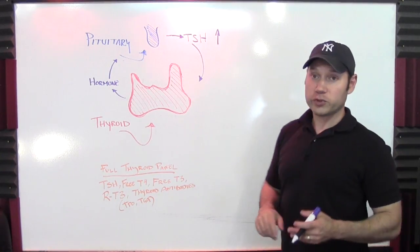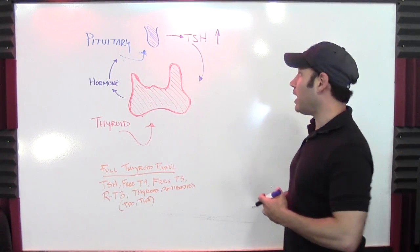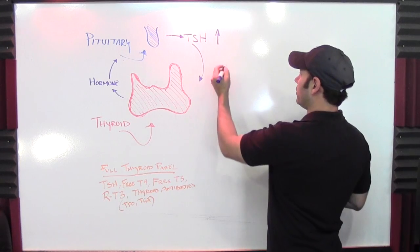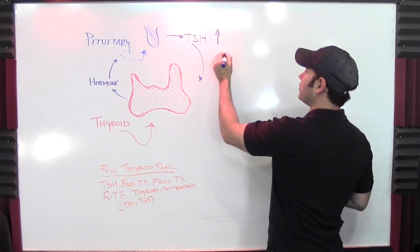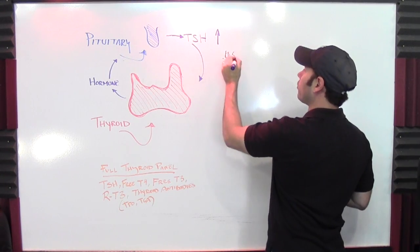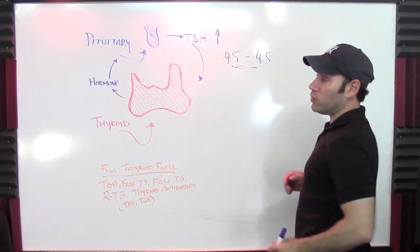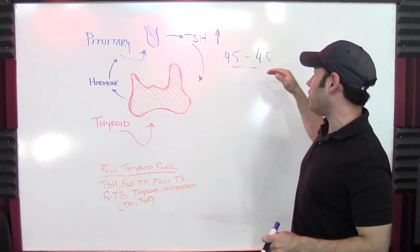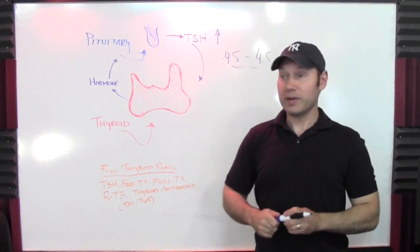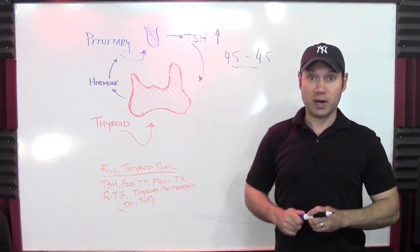I'll add that the reference range for TSH is not correct in most cases. The typical reference range is 0.45 to 4.5. That's the reference range that most doctors are using, 0.45 to 4.5. And that 4.5 is actually too high.